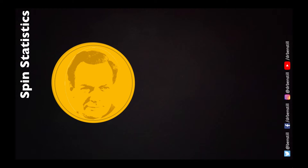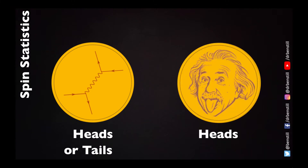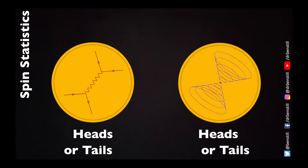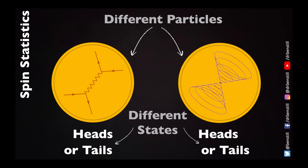Now let's pick an object which is commonly used to describe statistics. Let's choose a coin, and of course a coin has a heads and a tails side. The heads or the tails can be thought of as different states of the same coin. If we have a different coin with a different head and a different tail, it's quite obvious this is a very different coin. We can represent them as different particles, and the heads or tails as different states. The particles can be easily identified as different, but can still have the same state.